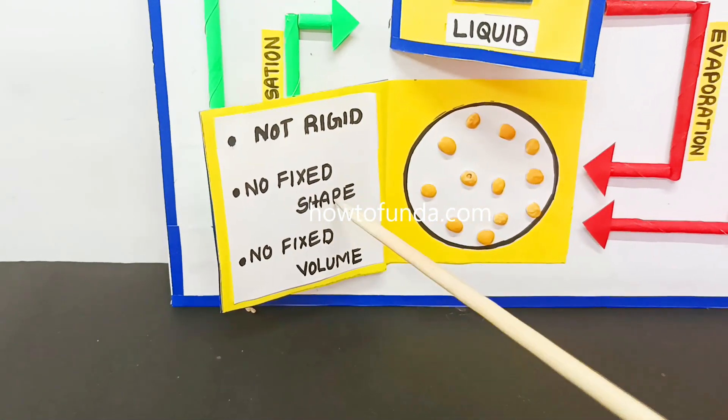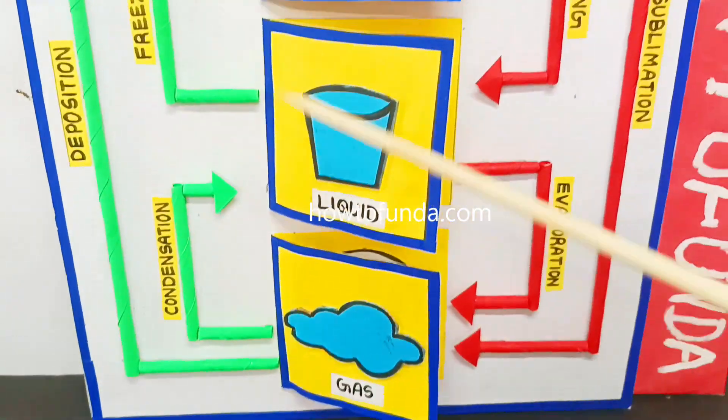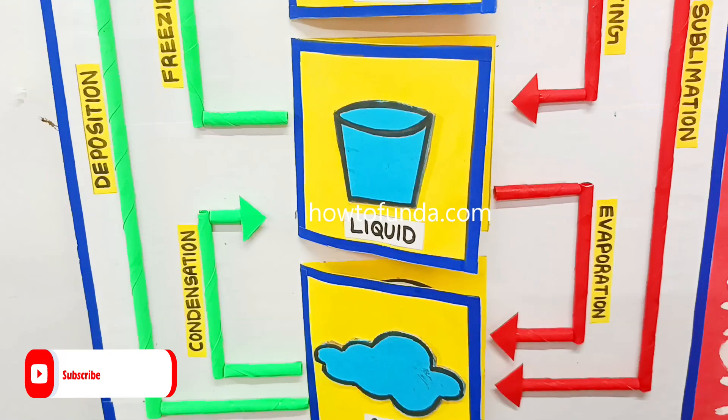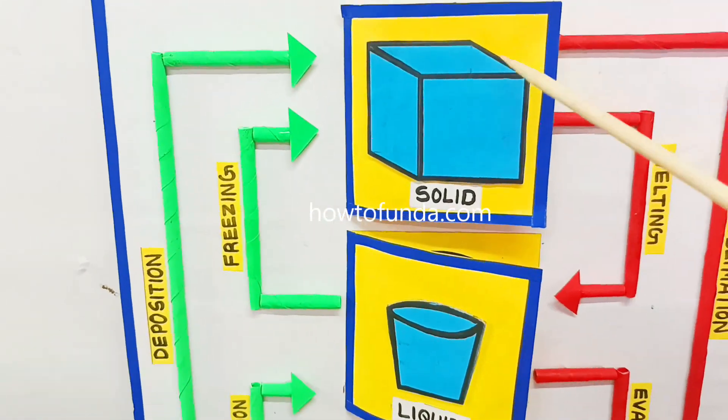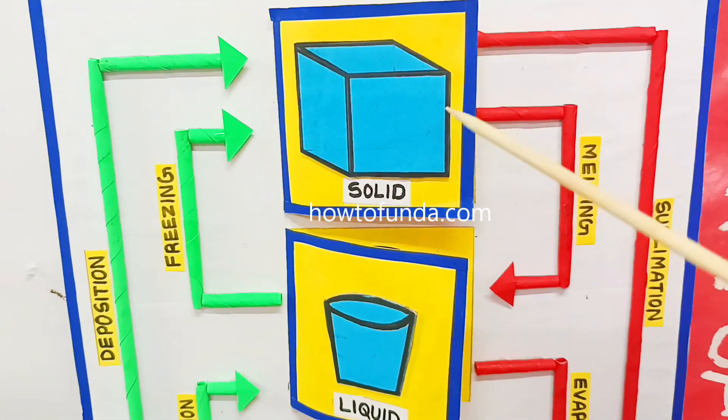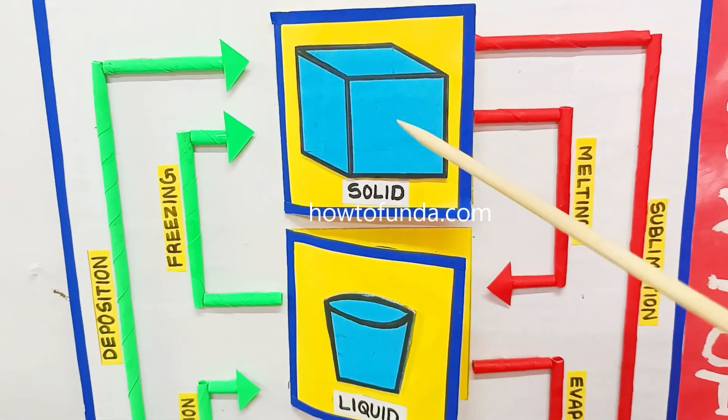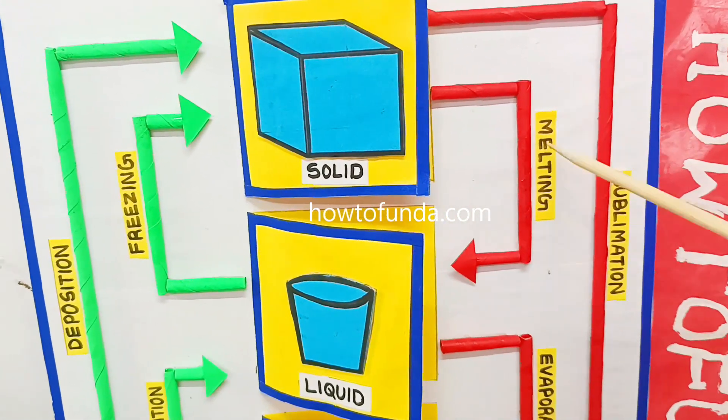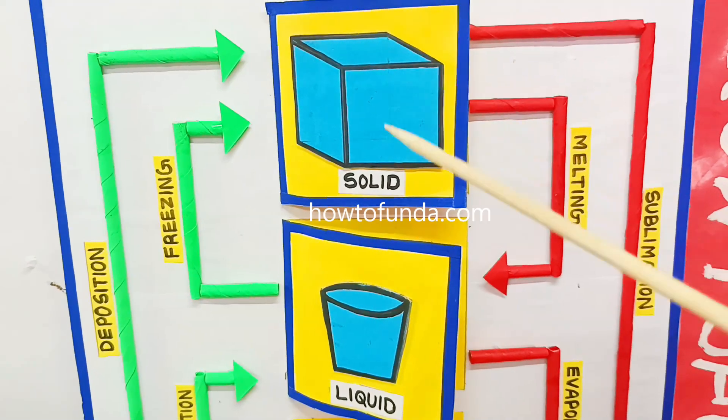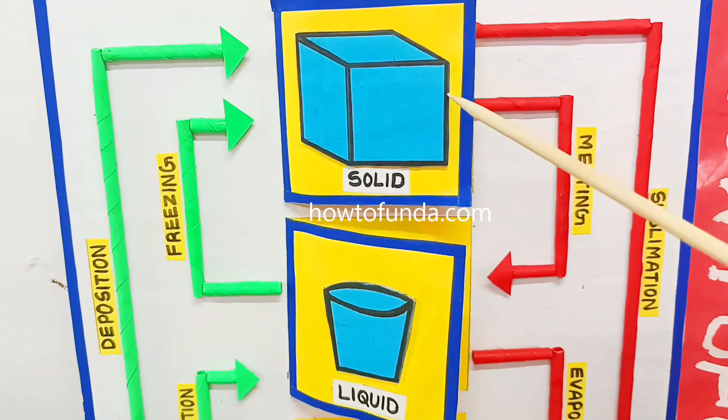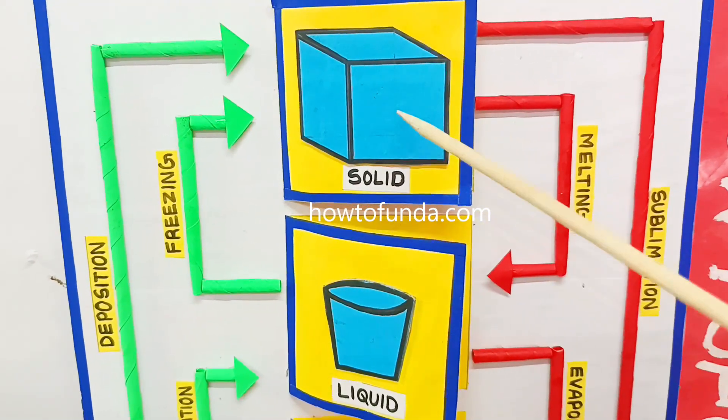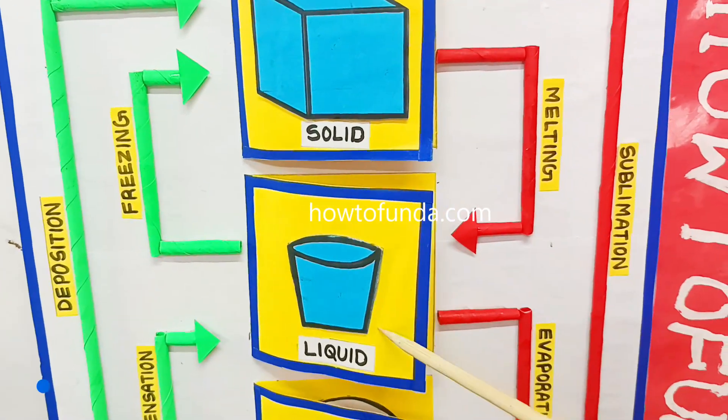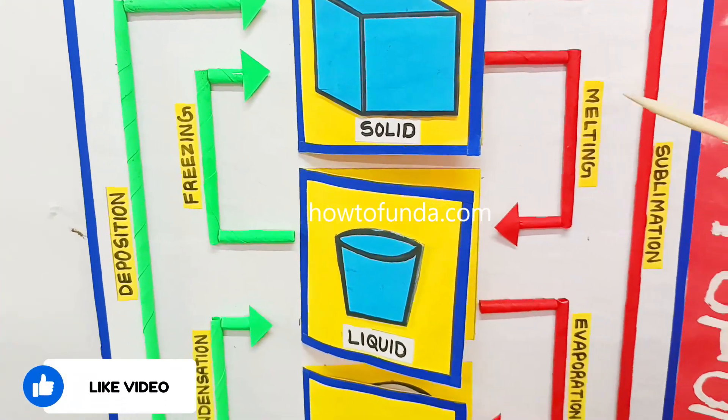Now we will see how the solid will become liquid and liquid become gas with the various transitions. If you see in this diagram, the solid will become liquid when we melt the solid. In this case, if you are going to melt an ice cube which is in solid state, when we are melting it becomes liquid.